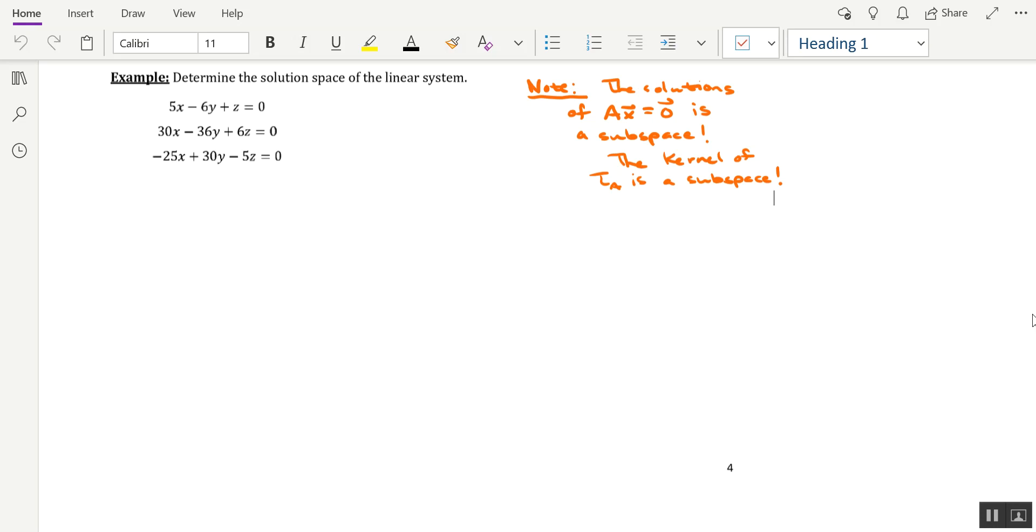And as the theorem preceding this example says, the solution set of a homogeneous system Ax equals 0 is a subspace of Rn. In this case, our solution space to this homogeneous linear system is going to be a subspace of R3.